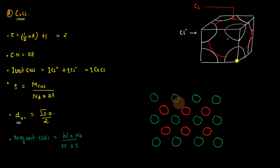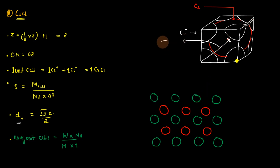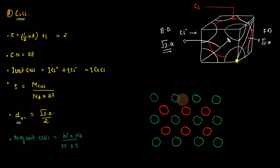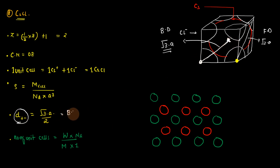The nearest neighbor distance, or distance between cation and anion, is also called the distance of closest approach. The distance between cesium and chlorine is half of the body diagonal. The body diagonal is given by the formula √3 × a, while the face diagonal is √2 × a. Therefore, the nearest neighbor distance or distance of closest approach between cation and anion is given by: body diagonal / 2 = √3a / 2.